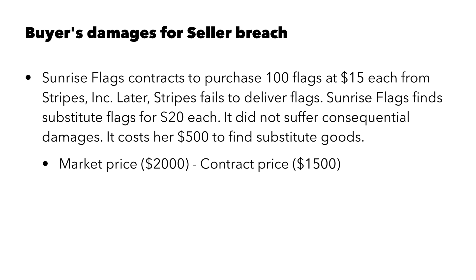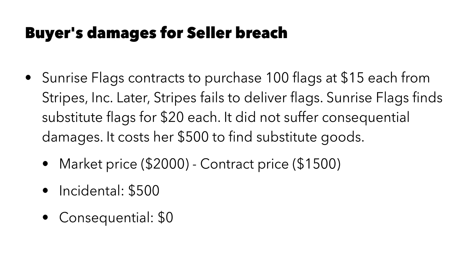In this case, the market price is $2,000 minus the contract price of $1,500. Sunrise expected to spend $1,500 to get 100 flags; instead they had to spend $2,000 for those same 100 flags. So the difference between market price and contract price is $500. Plus the incidental damages — the cost of mitigation, whatever it cost to find substitute goods — $500. Consequential damages are zero. Total damages are $1,000: $500 difference between contract and market price, plus $500 incidental.